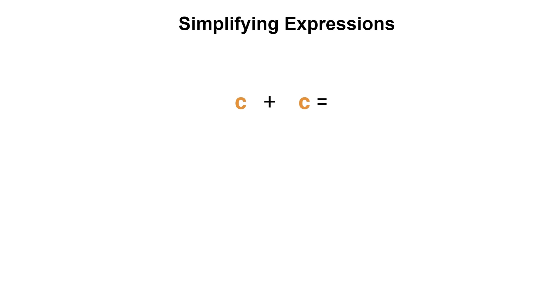Let's try another one. In this example we have the variable c plus the variable c. You'll notice that both terms do not have a coefficient — there's no number in front of the variables. When a variable does not have a coefficient, this means there is an unwritten number one in front of the variable. Remember, a number next to a variable means it is being multiplied by that variable.